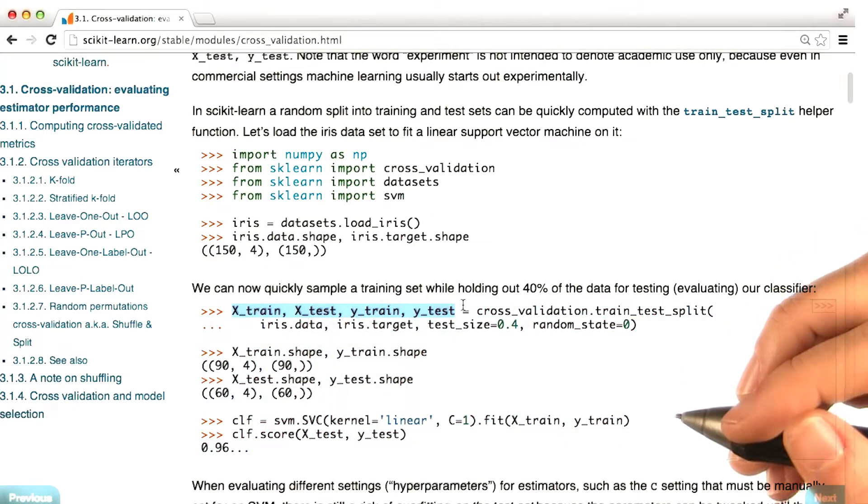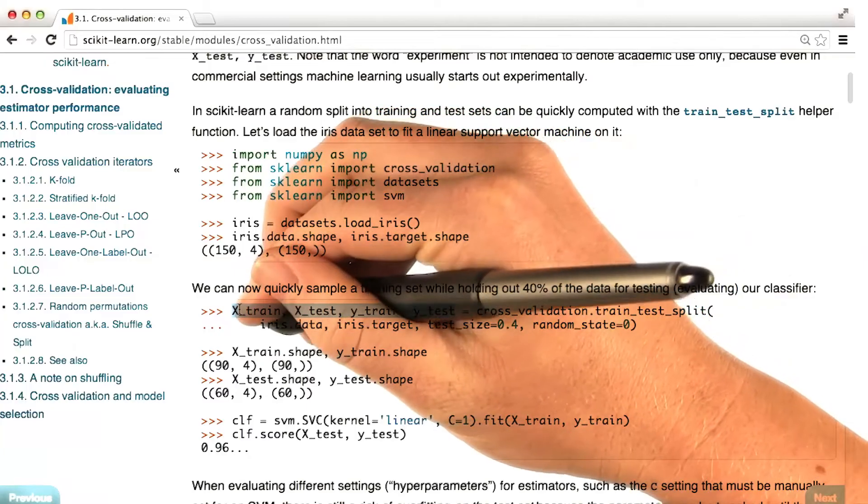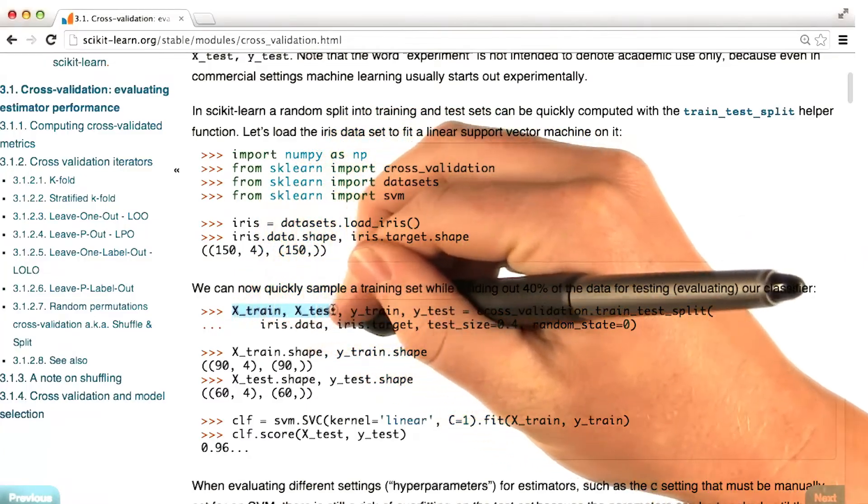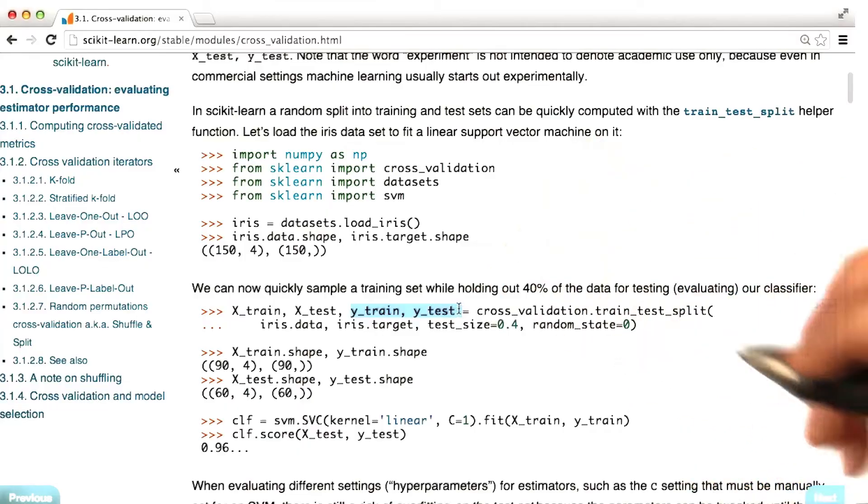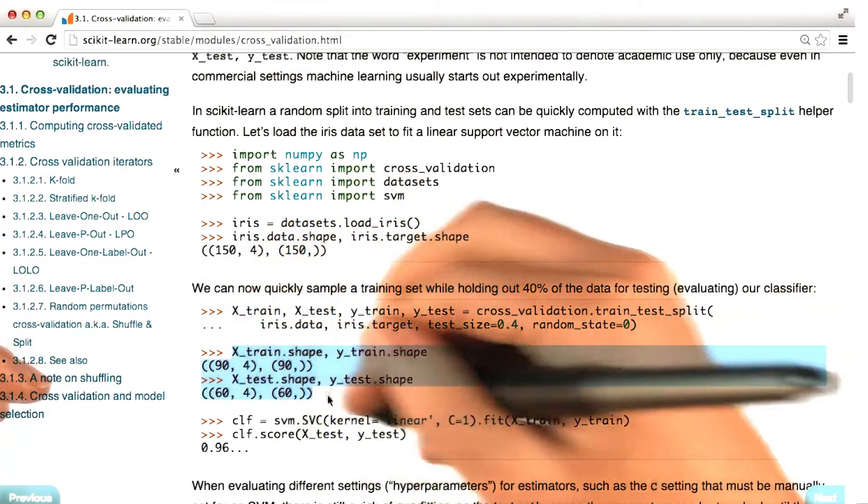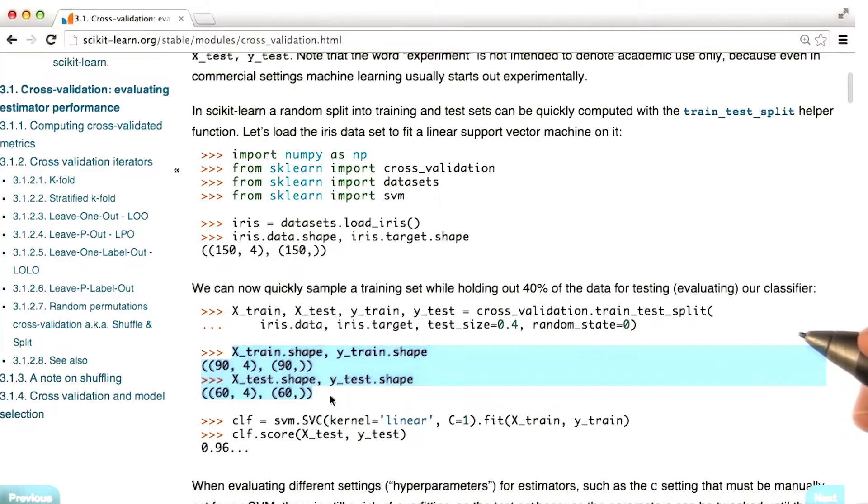The output of this is going to be four sets of data. The first two are going to be the features for the training and for the testing data. The second two are going to be the labels for the training and the testing data. So then in this example, there's a couple lines here probing how many events fall into each of these two data sets, the training and the testing.